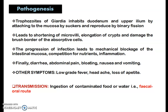Coming to the pathogenesis of Giardia, the trophozoite inhabits the duodenum and upper ileum by attaching to the mucosa using the sucking disc and reproduces by binary fission. When they inhabit or infect the intestinal mucosa, it may lead to shortening of microvilli.